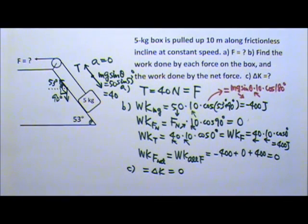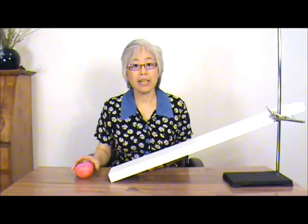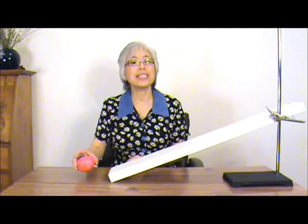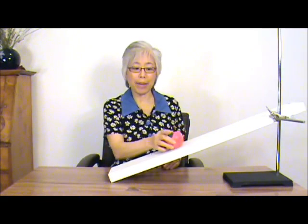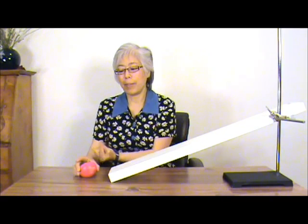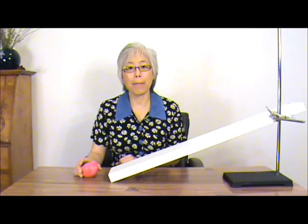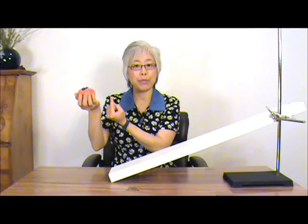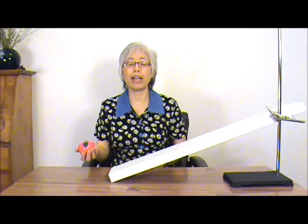Before finishing, note that normal force is always perpendicular to the contact surface. If an object only slides along a surface — whether a table or an incline — the normal force is perpendicular to the displacement, so it does zero work. However, if the object moves in other directions — for example upward — the work done by normal force would be positive since normal force and displacement are in the same direction; moving downward it would be negative.